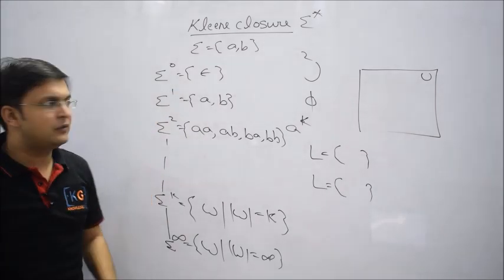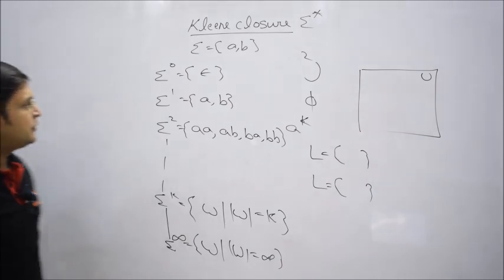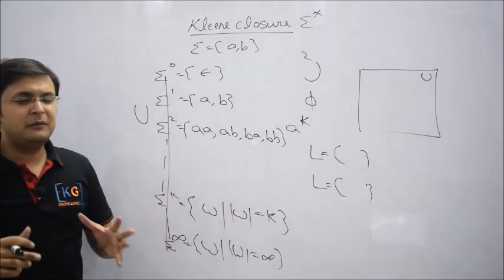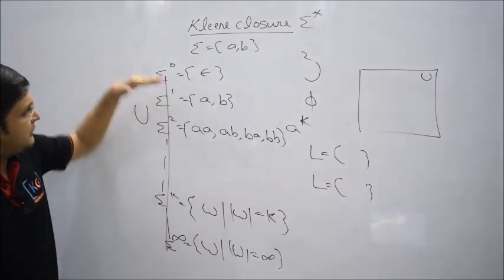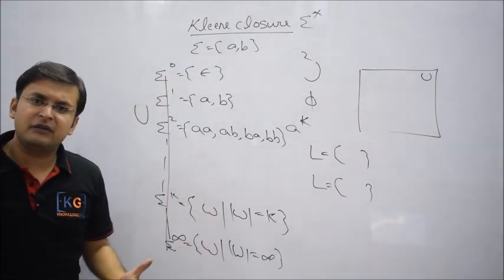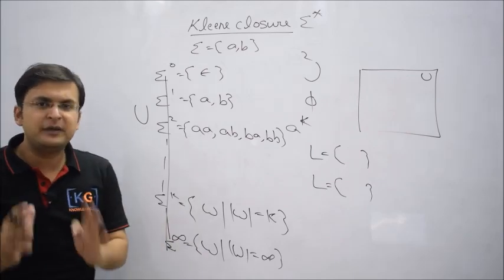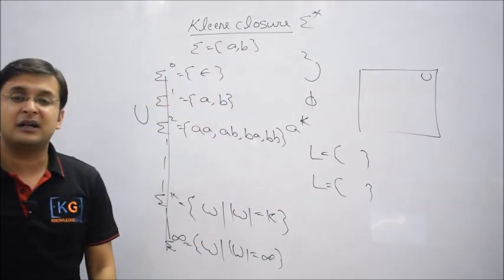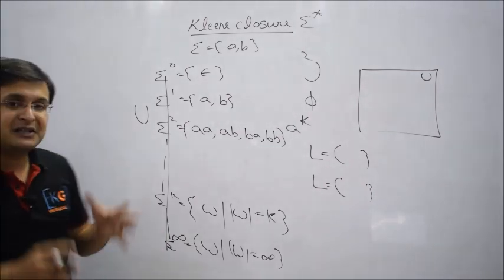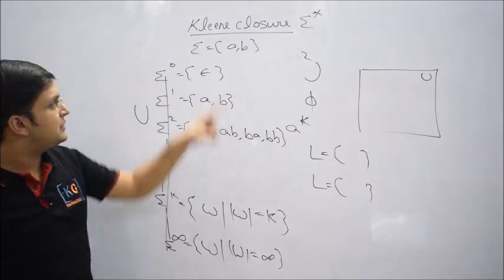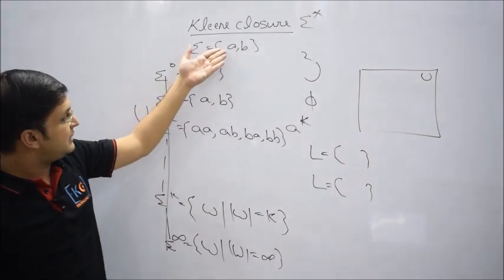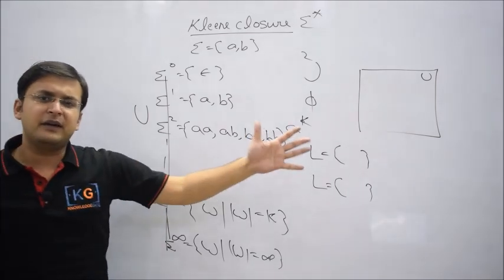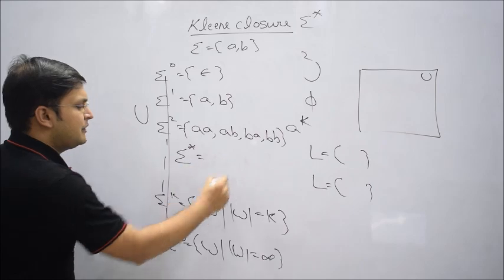Sigma^0 contains strings of length 0, sigma^1 contains length 1, sigma^2 contains length 2. If we take the union of all these sets, every possible string will be there — you cannot name a string that won't be included. Strings of length 0, 1, 2, 3, and so on — every string of any length generated from {a, b} will belong to this union. And the union of all these sets is nothing but sigma star. That is the basic conceptual mathematical definition.